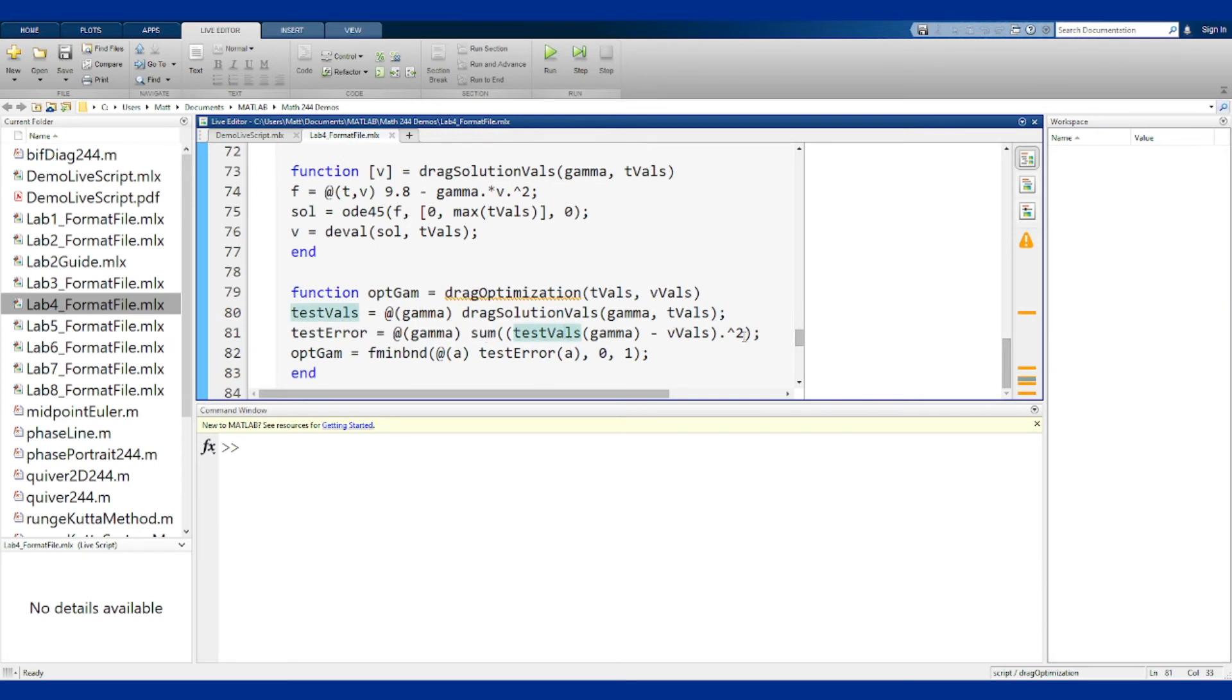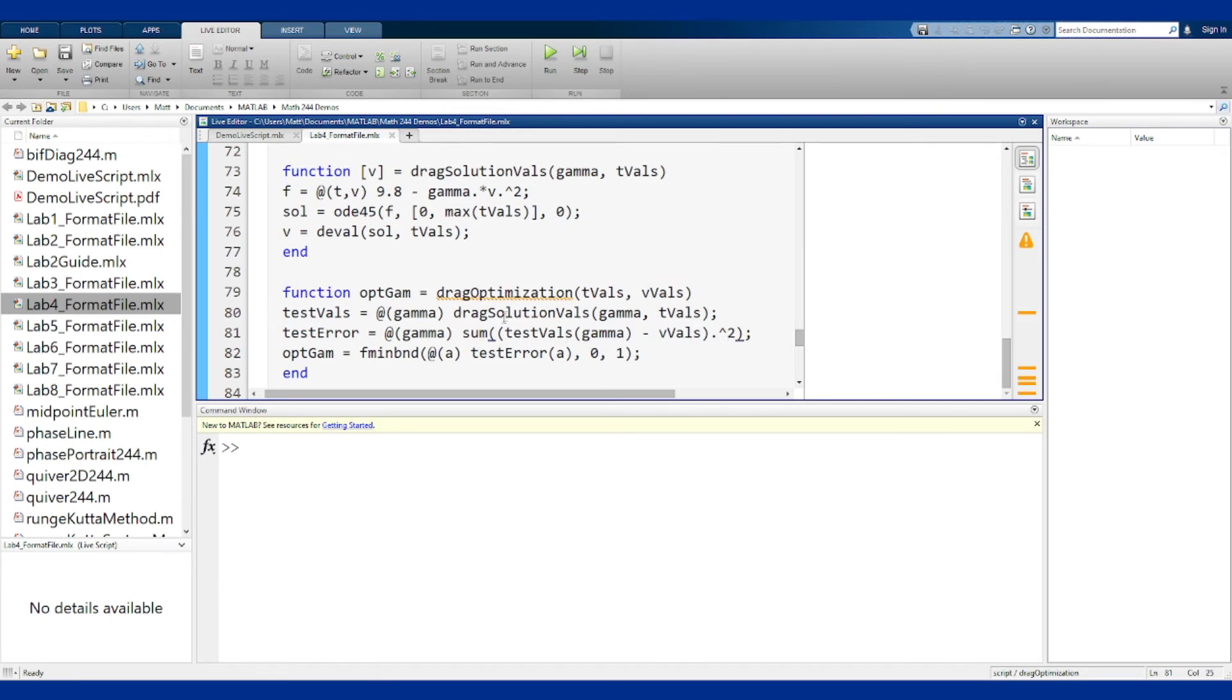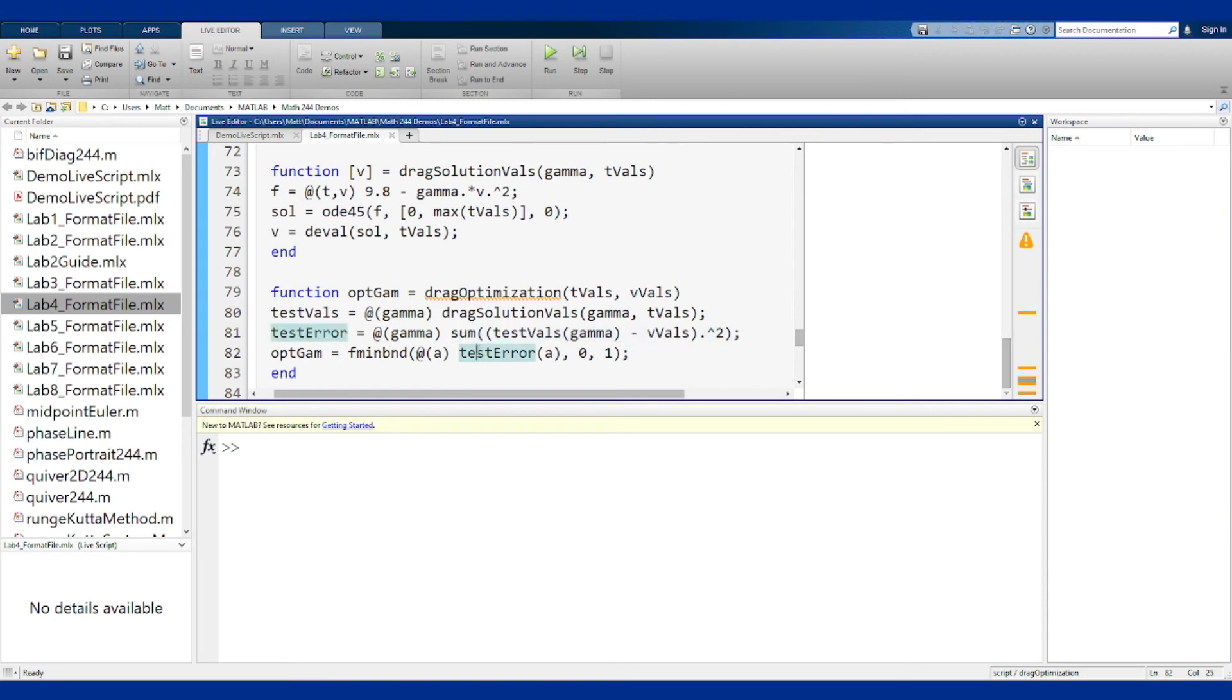Then build the error. The commonly used error for these things is a sum of squares. So we're going to take our test values, which is the solution that we get for our guessed value of gamma, subtract the value given in the data and square that and add them up. This sum of squares gives us an error, basically the sum of squares of how far apart each point that we have from our data is. This is the gap between the solution that we guess and the data, and this gives us a total error among that.